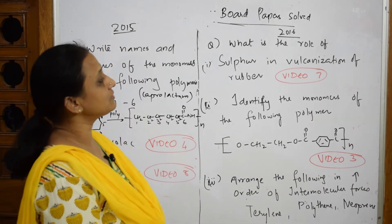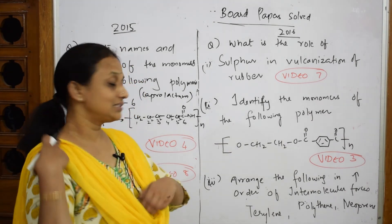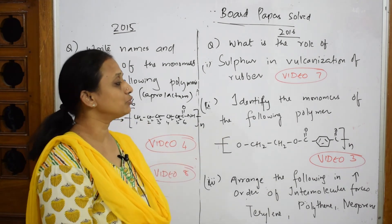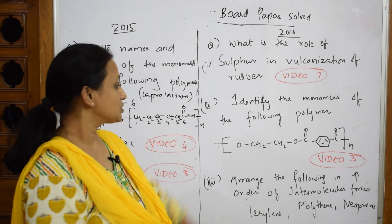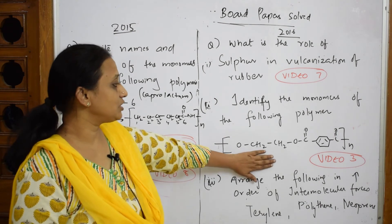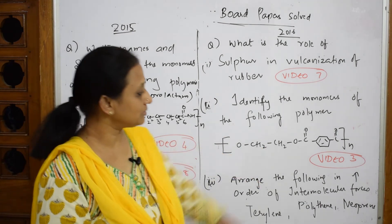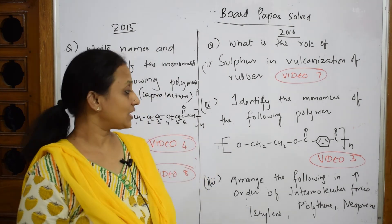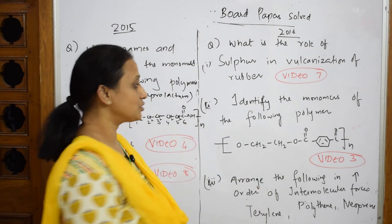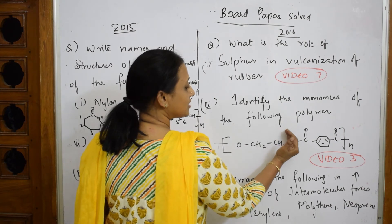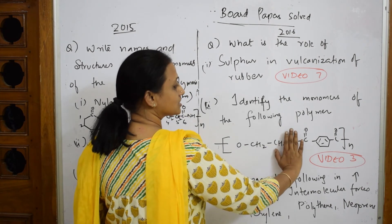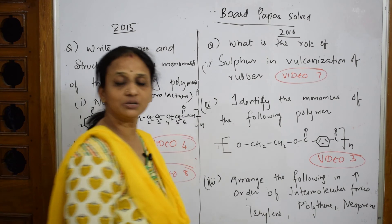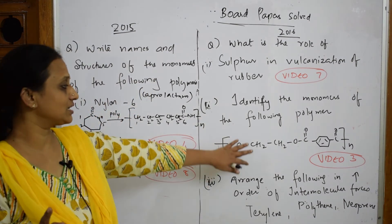Let's come back to the 2016 paper. What is the role of sulphur in vulcanization of rubber? I did this in video number 7. Next question: identify the monomers of the following polymers. The first one is a polymer — you can tell because of the N which represents repeating links. I covered this in video number 3. You need to see where the cleavage is to identify the monomer structure.